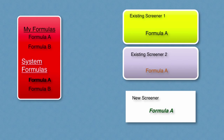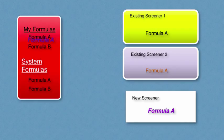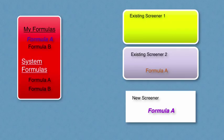One final parting shot: yes, you can pull in a system formula, change it, and save it. Your changed formula goes into the My Formulas section — the system will not let you change the system formula. And yes, you can change one of your formulas and save it explicitly from a screener. If you don't change the name, it will overwrite the existing formula, but it will only change in other screeners if they have referred to it with an imported orange link, or you delete and re-add the updated formula by hand in the other screeners. Thanks for watching.